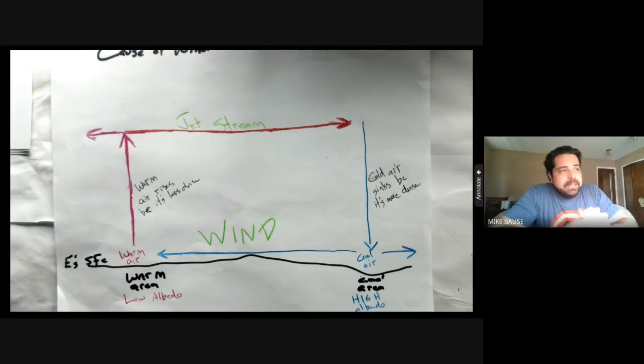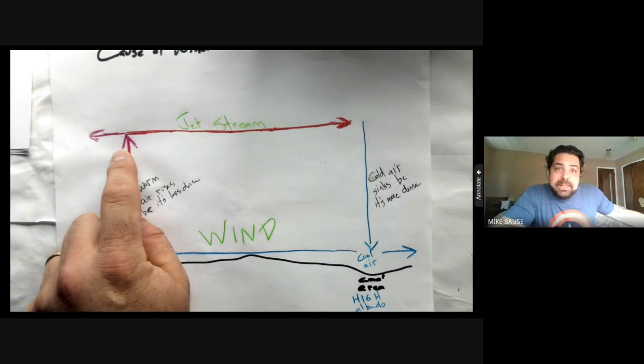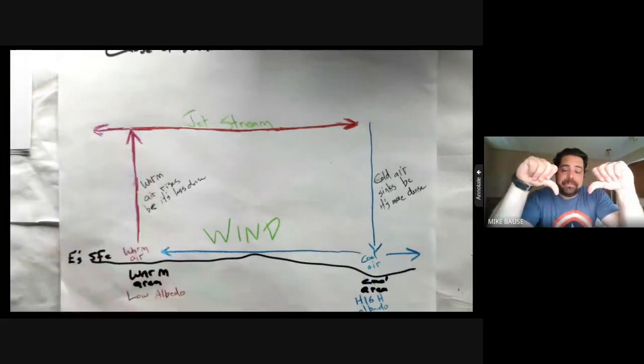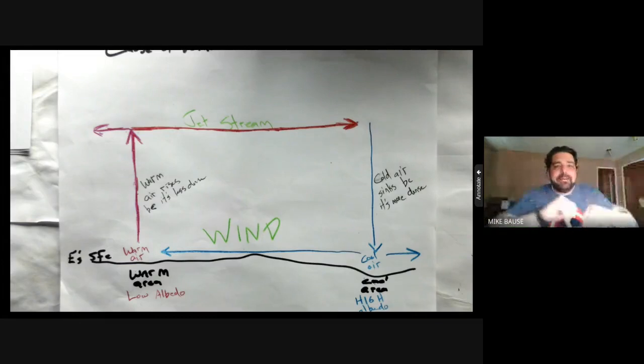Warm air rises, but as it rises it cools in temperature. This is called an adiabatic temperature change - a temperature change without a change in energy. Warm air rises but becomes cooler. Why? Because there's less air up there. As air rises, the air pressure decreases. When you decrease pressure, you decrease temperature. If you've studied the gas laws, Boyle's and Charles' laws are playing a role here.